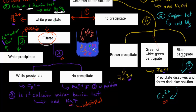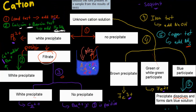If a blue precipitate forms in step four, we add ammonia into that solution. If that blue precipitate dissolves into a dark blue solution, copper is present. Those are all the primary tests for cations.